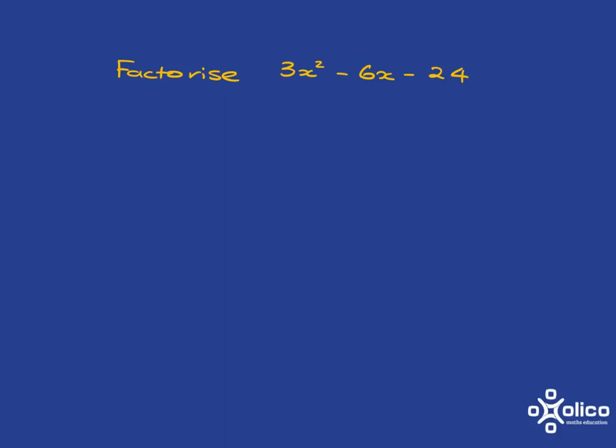Let's have a look at factorizing this. Try and do the first line yourself. Hopefully you recognized that the first thing you need to do is take out a common factor because we always look for that first. And here your common factor is 3. And that will leave you with that.